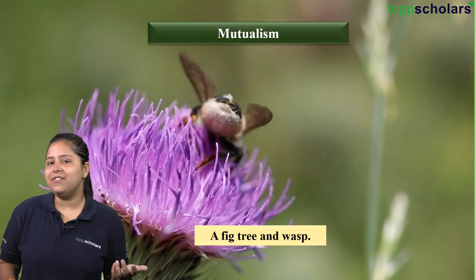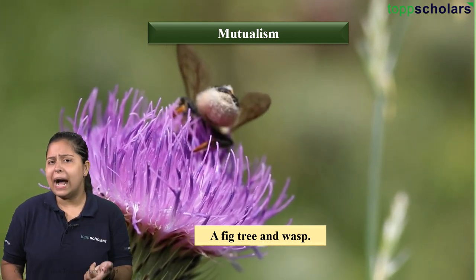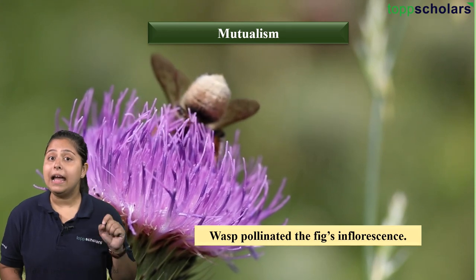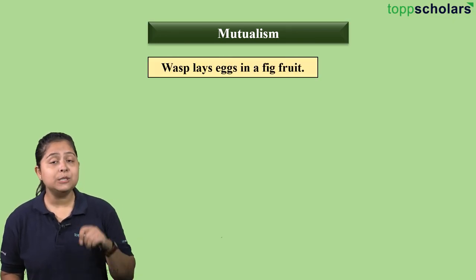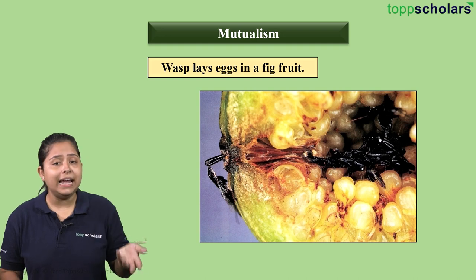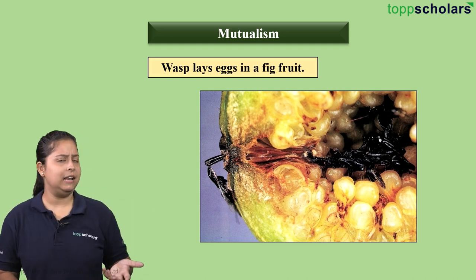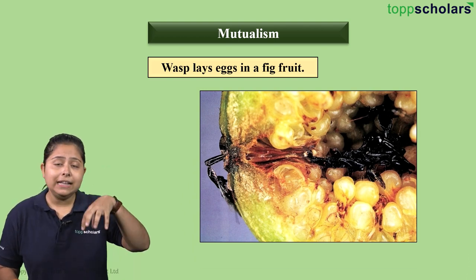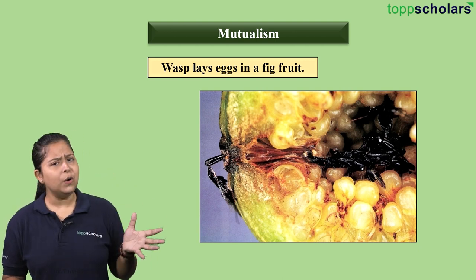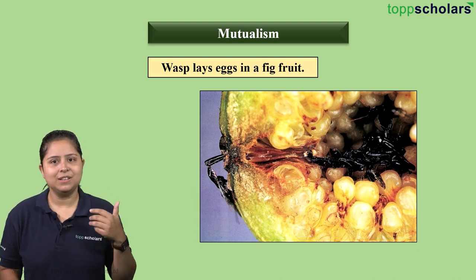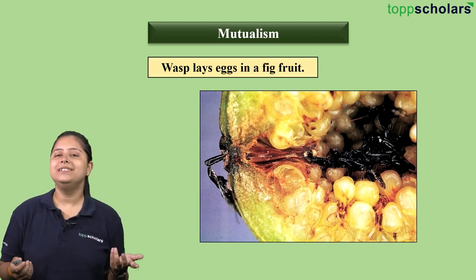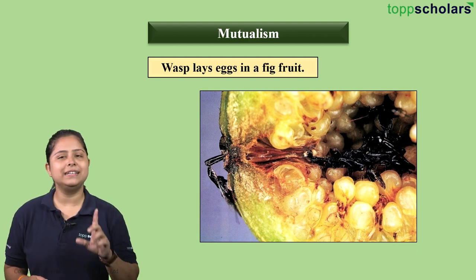The fig tree benefits from this interaction, but how does the wasp benefit? The wasp pollinates the fig's inflorescence, and in return it lays eggs in the fig fruit — tiny eggs which hatch there and new organisms are reproduced. So the wasp gets a place to lay its eggs. Both interacting species are benefited, and hence this is termed mutualism.